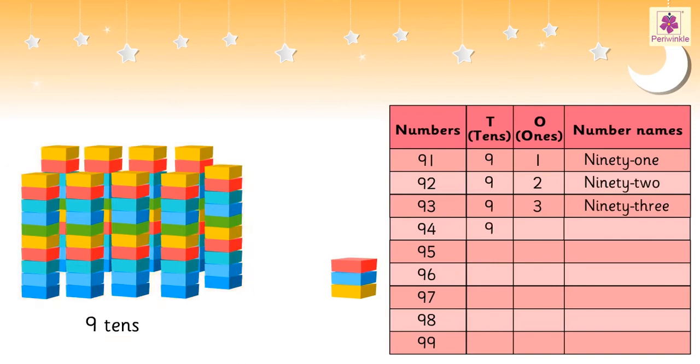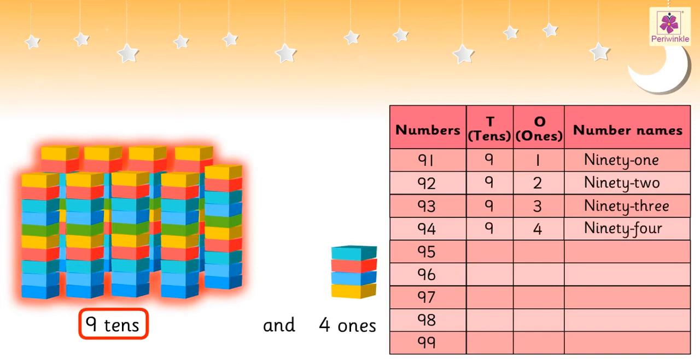9 tens and four ones is 94. 9 tens and five ones is 95. 9 tens and six ones is 96.